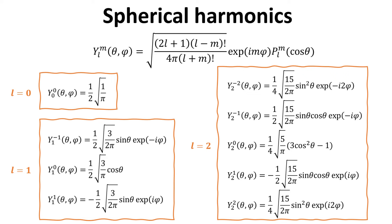For each index L, we access only m from minus L to plus L. Thus, for L equals 0, we have only m equals 0. For L equals 1, we have m of minus 1, 0, and plus 1. For L equals 2, we have m equals minus 2, minus 1, 0, 1, and 2.